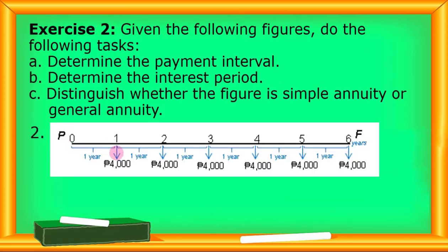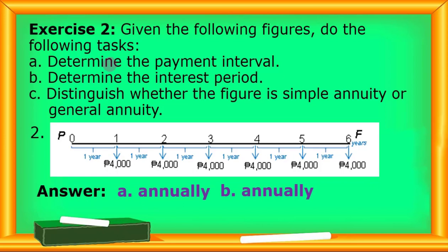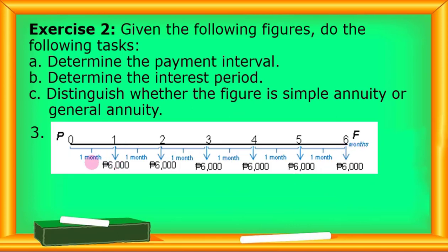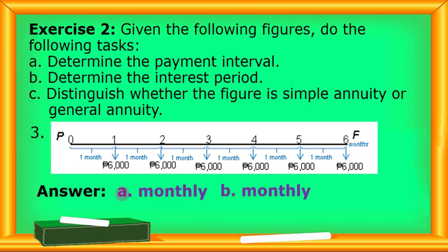For number two: the payment interval is annually and the interest period is annually. For letter A, it's annually; letter B, annually also. So for letter C, we have a simple annuity. For number three: the payment interval is every month and the interest period is every month. Answer for letter A is monthly; letter B, monthly. So for letter C, the answer is simple annuity.